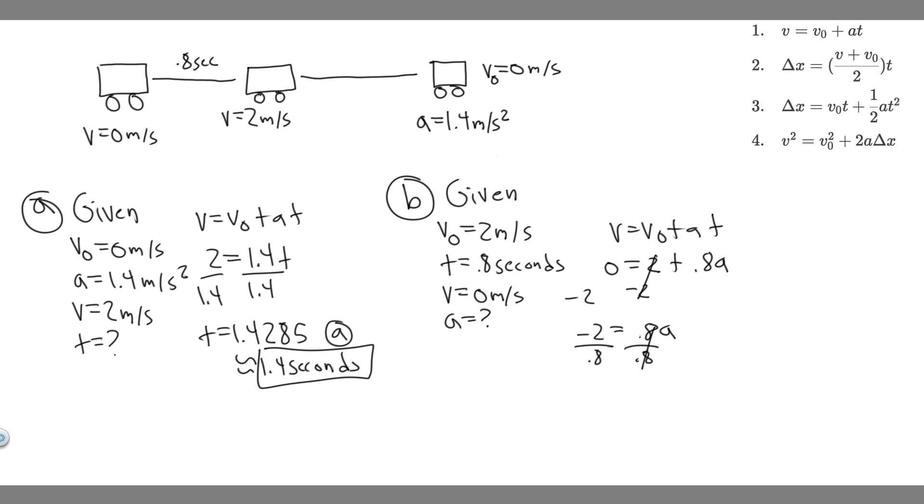So you want to just do minus 2 divided by 0.8. And when you do that, you're going to get a equals minus 2.5. And then the units are meters per second squared.